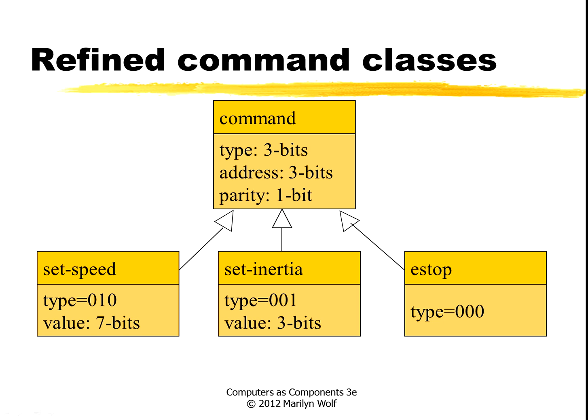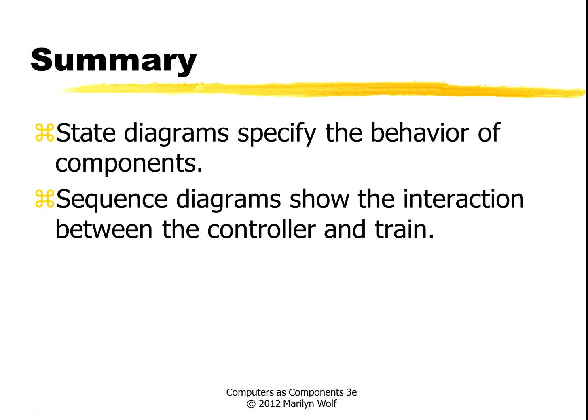Here's a class for the command. We fill in some more details now — here's the format of the command, here are the actual command types. You can see that we filled in the bits that specify the type here. We've also said that different commands have different lengths of parameters. Of course, we don't know the value of that value slot until somebody actually sends a message. In summary, the state diagrams specify the behavior of the components, the sequence diagrams show the interactions between the controller and the train, and between the different pieces of each one of those.